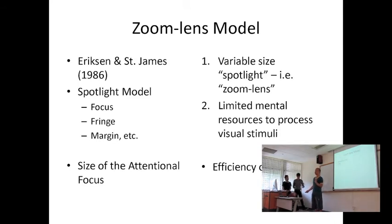And they propose a second feature of our attention is that as human beings, we have limited mental resources to focus on any given visual stimuli. So you have limited resources, scarcity on one hand, and you have a visual field to zoom in and zoom out on on the other hand. So what this leads to is two aspects of our attention. We have the size of our attentional focus that is inversely proportionate to the efficiency of processing.